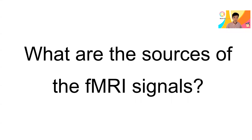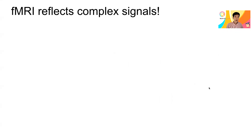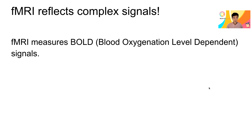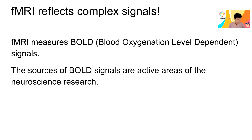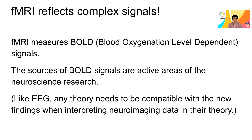What are the sources of the fMRI signal? fMRI, in short, reflects complex signals. fMRI measures blood oxygenation level-dependent signals, and the source of these BOLD signals is very complicated — it's one of the active areas of neuroscience research. Like EEG, any theory of consciousness needs to be compatible with new findings, especially when it interprets neural imaging data in terms of their theory.